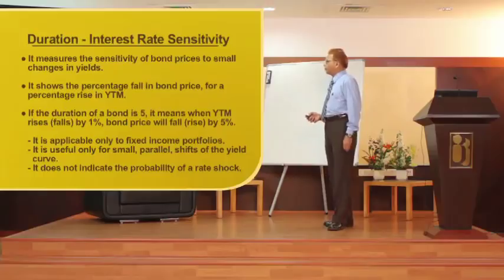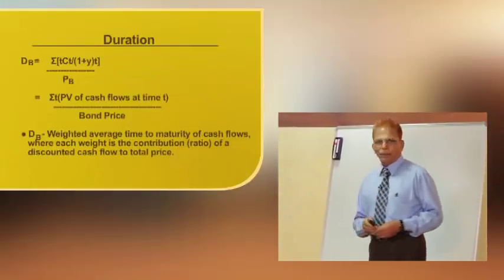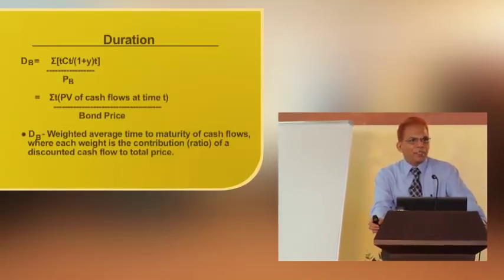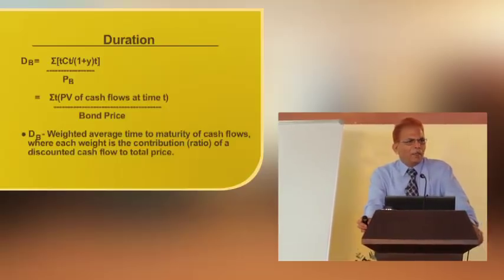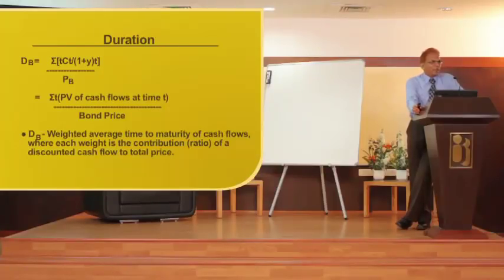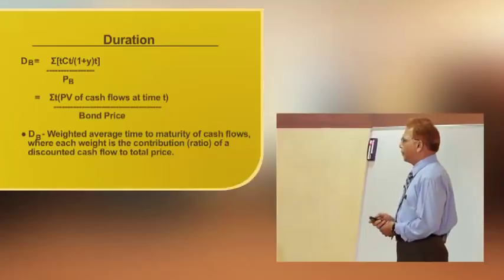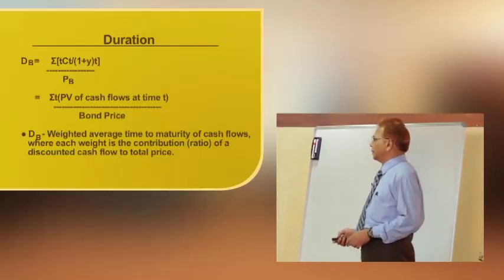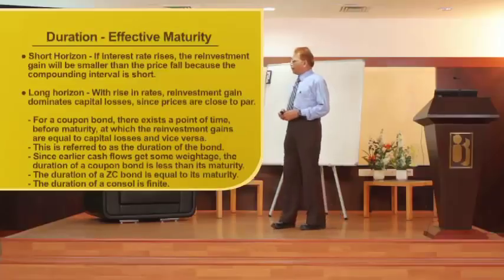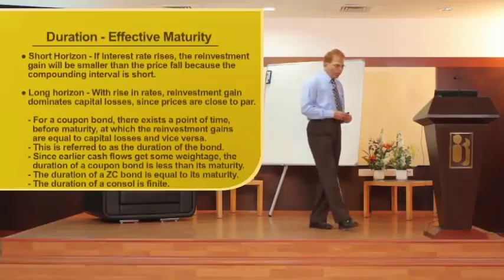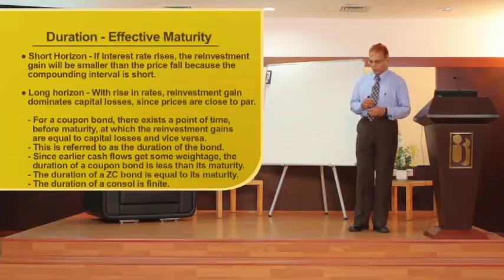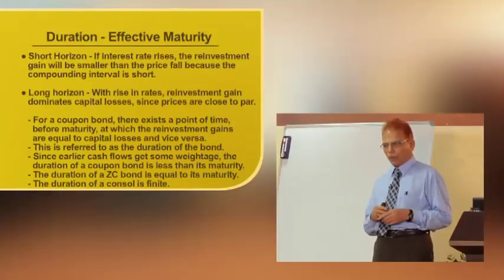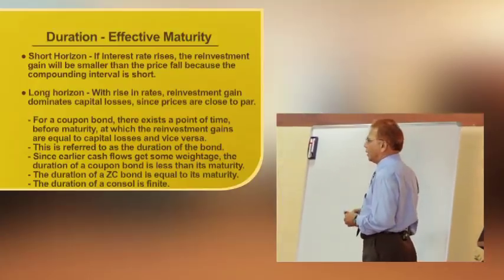The formula for duration is essentially the weighted average time to maturity of cash flows, where each weight is the contribution ratio of a discounted cash flow to the total price. The duration formula is the summation of time multiplied by the present value of cash flow at time t, divided by the bond price. Duration represents effective maturity — the date at which a fixed rate instrument matures for payment.